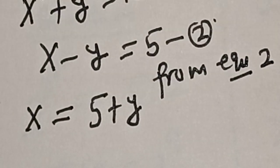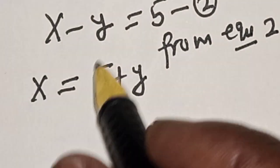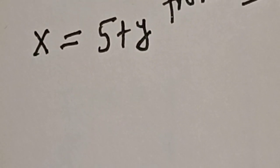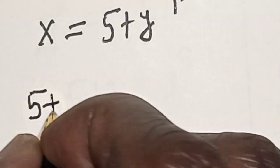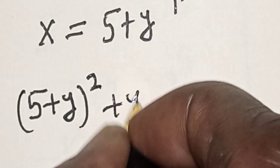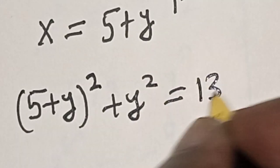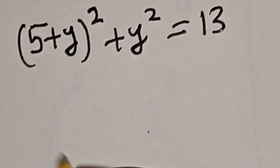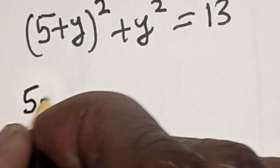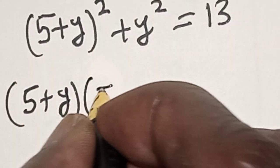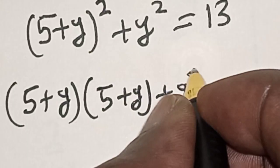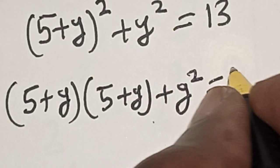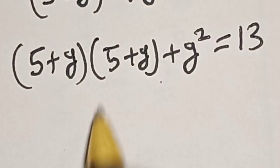Now let's substitute for x in equation 1. So we have (5 plus y) squared plus y squared is equal to 13. This is (5 plus y) multiplied by (5 plus y), plus y squared, is equal to 13. Now let's open this bracket.